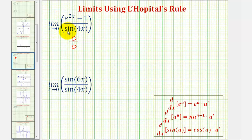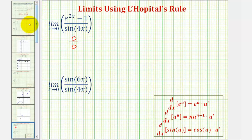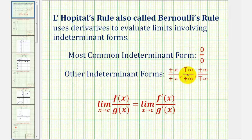And then for the denominator, this is approaching sine zero, which is zero. So because the limit fits one of these indeterminate forms, we can apply L'Hôpital's rule that tells us the limit as x approaches c of this quotient is equal to the limit as x approaches c of the quotient of the derivatives of the two functions.